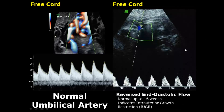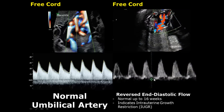In reversed end diastolic flow, we see flow reversal. The velocity appears below the baseline, indicating that there is reversal of flow due to high resistance, and this indicates intrauterine growth restriction. This pattern is normal up to 16 weeks, but after 16 weeks it can indicate intrauterine growth restriction. In this image, you can also see velocity below the baseline indicating flow reversal, which is a sign of intrauterine growth restriction.